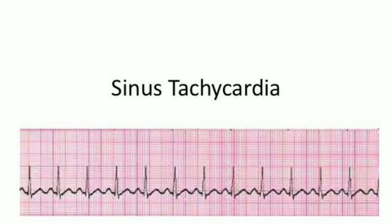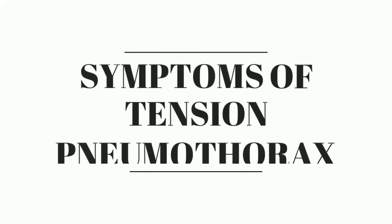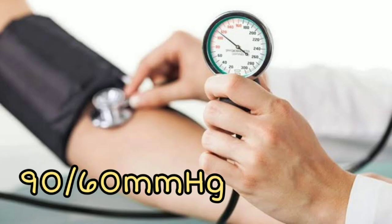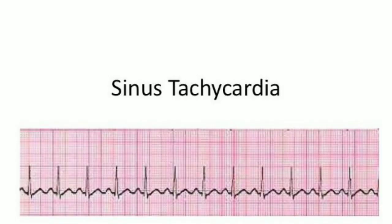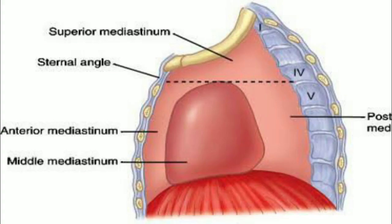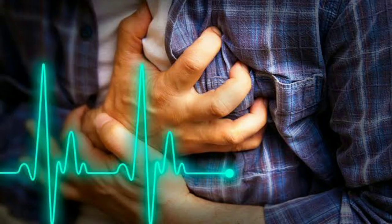Tachycardia means a heart rate over 100 beats per minute. Tension pneumothorax produces the most severe respiratory symptoms, including decreasing cardiac output, hypotension — blood pressure less than 90/60 mmHg — tachycardia, tachypnea, which means abnormally fast breathing, and signs like mediastinal shift and tracheal deviation to the opposite side. There may also be some cases of cardiac arrest.